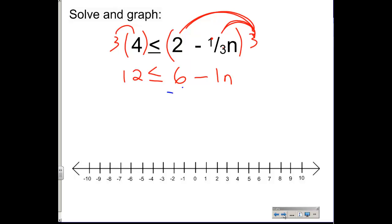And then I'm going to subtract 6 from both sides. That will give me 6 is less than or equal to negative n. Now you can't leave your answer with negative n. We want positive n. So the way we fix that is we use the multiplication property of negative 1, where we multiply both sides by negative 1, and all that will do is change the signs.